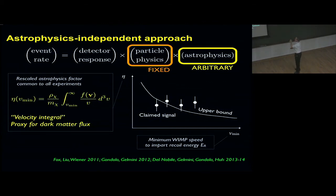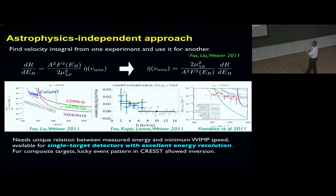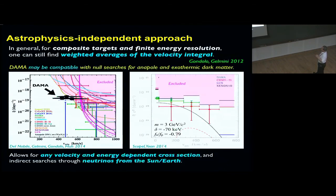This program has been implemented in successive stages. The first by Fox-Peebles-Weiner, who had the initial idea that you can just compute this velocity integral from the event rate. However, there's no unique relation between the measured energy and the WIMP speed. You can map the data to this v_min unambiguously unless in special cases which were done here. That still allows people to do weighted averages of the velocity integral. This is improvement on the previous work. With those weighted averages, two models were found that make DAMA compatible with other signals: the anapole dark matter that I mentioned earlier, and the exothermic dark matter.